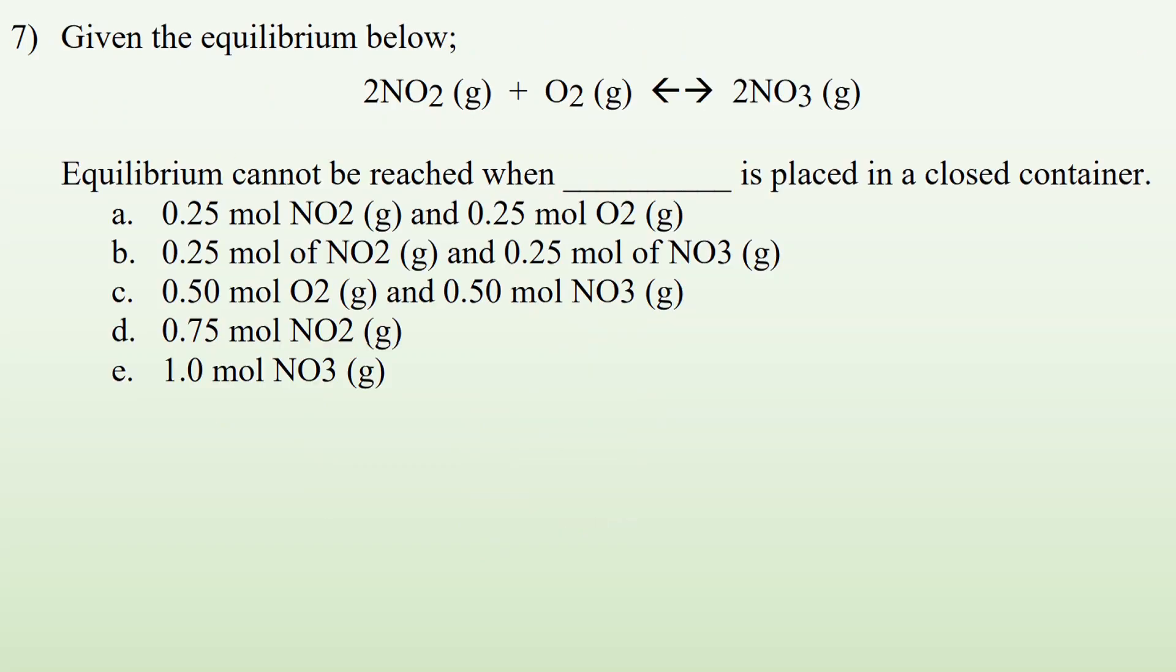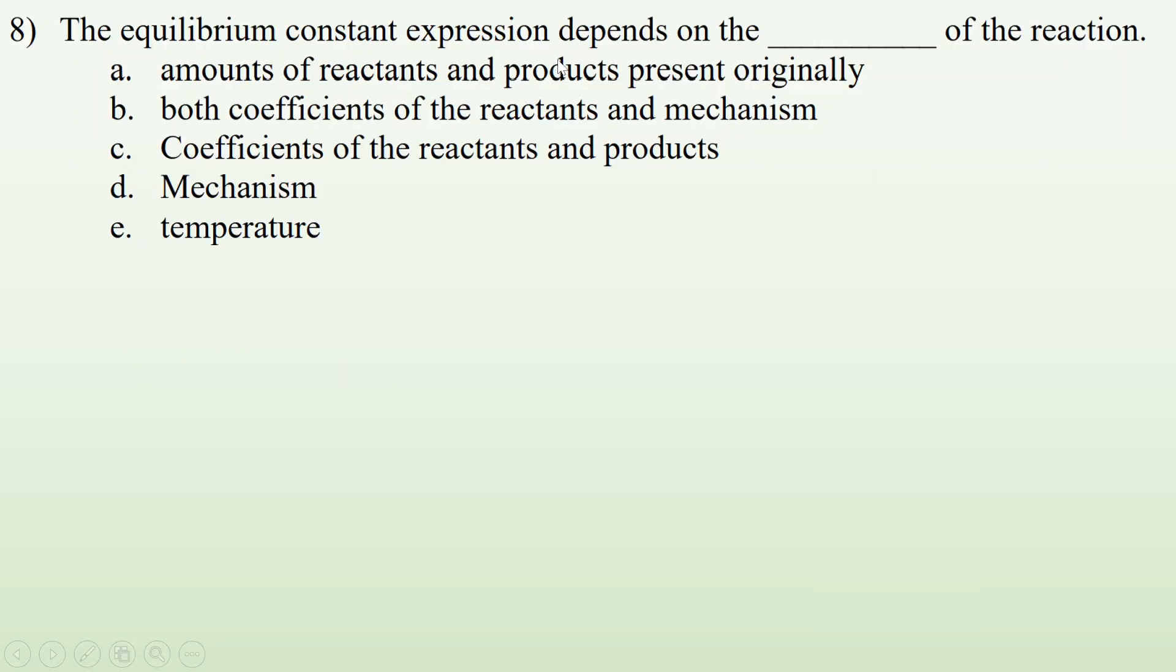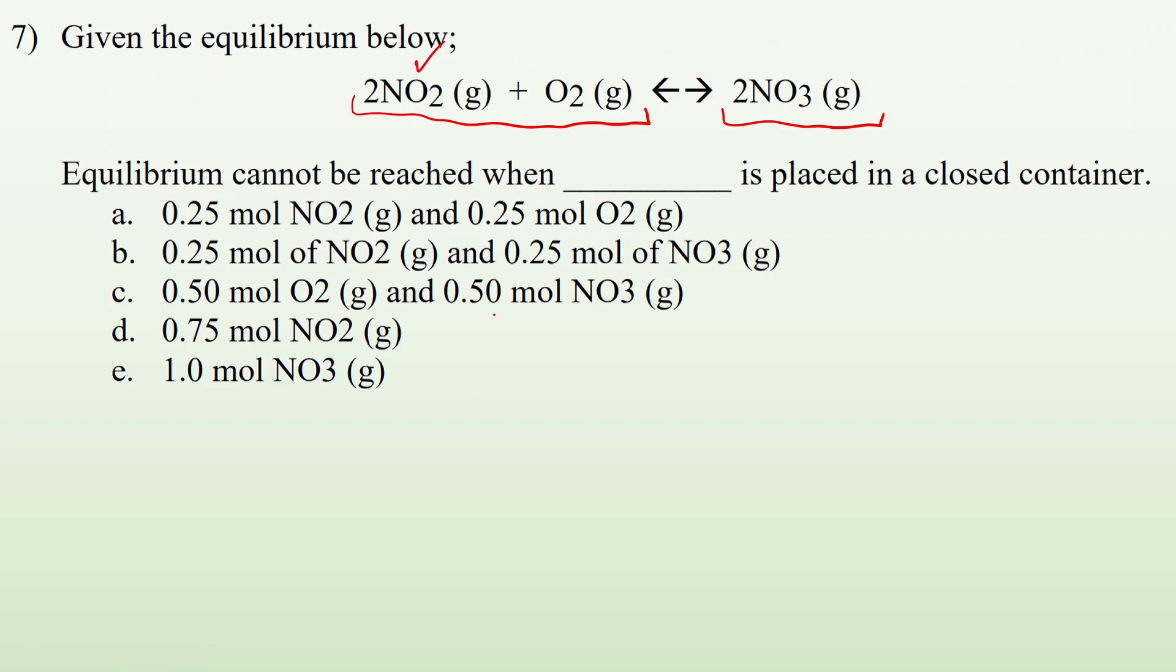Seven, given the equilibrium below, equilibrium cannot be reached when blank is placed in a closed container. So if we're trying to create an equilibrium, we need to start with either all of the reactants or all of the products in order to get both a forward and reverse process. So let's see, they're saying we put N2 and O2 in a container. Those are both reactants.